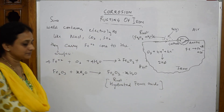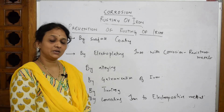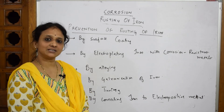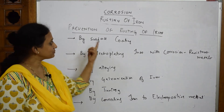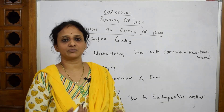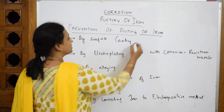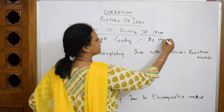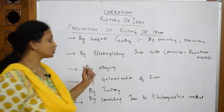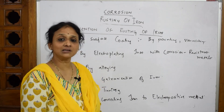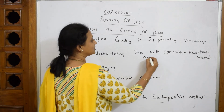Now let's finish the topic with methods for preventing rusting of iron. The first method is surface coating — when we paint something with paints or varnish, the surface layer is protected from corrosion. You can write the subheading 'surface coating by painting or varnishing.'